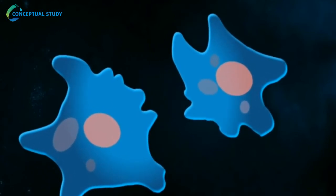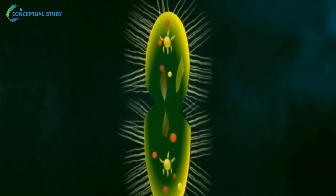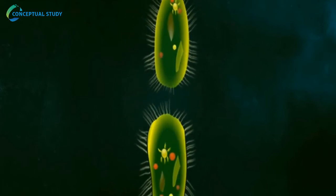Transverse binary fission in Paramecium: In this type of fission, the body of Paramecium divides transversally. Cytokinesis takes place along transverse axis.